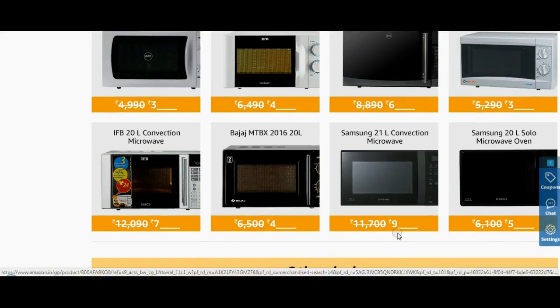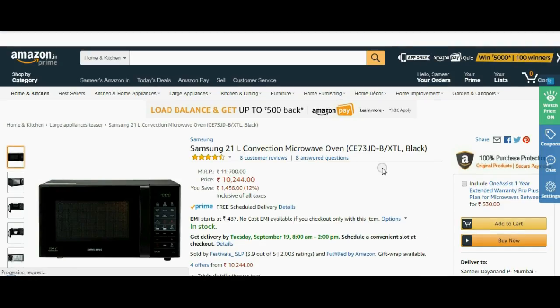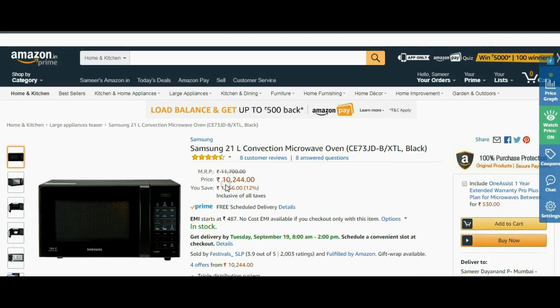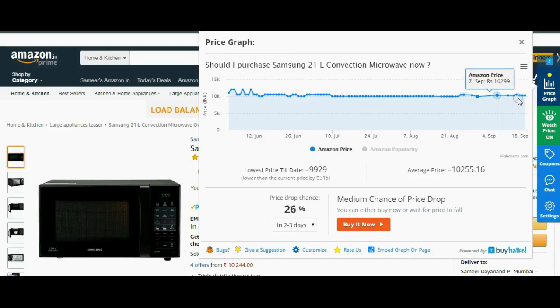You can see that the price is 11,700 and 9,000 something. Now, you can see that the price is 10,244 and not 11,700. You can see the price graph and its complete history. You can get a good idea on how the price will increase or decrease.